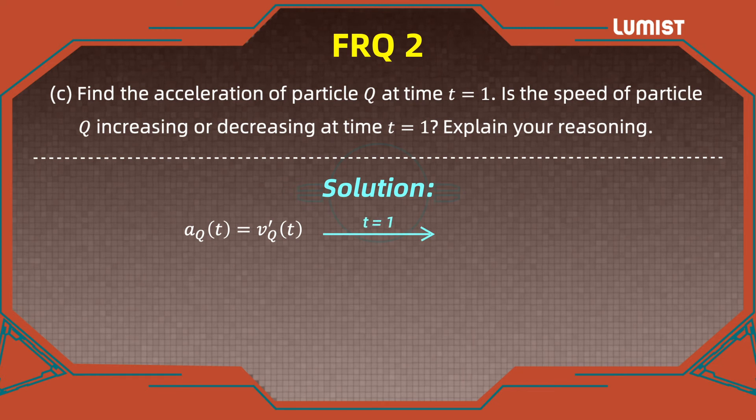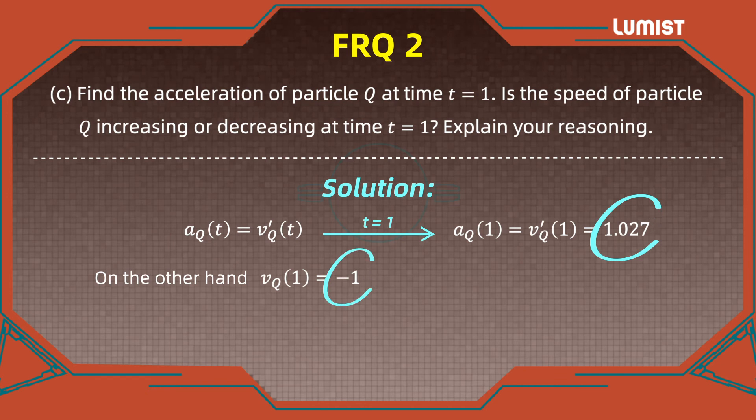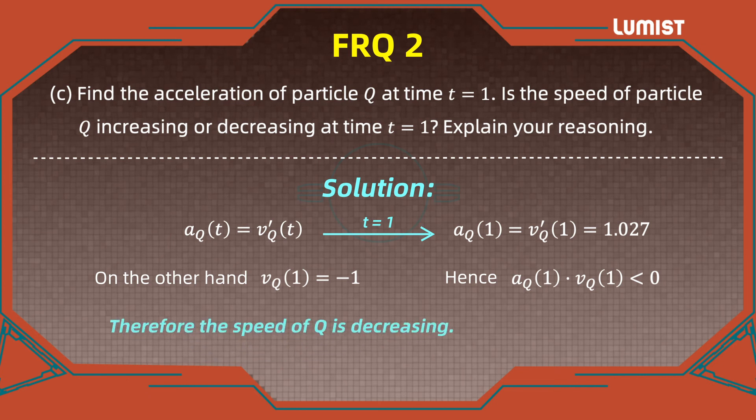We plug in t equals 1 to obtain the value we're interested in: a_Q(1) equals v'_Q(1). We plug these values into a calculator and we get approximately 1.027. Now we know the velocity of Q at 1 equals minus 1. Notice that this is positive, this is negative. As a conclusion, the product of the acceleration at 1 and the velocity at 1 is negative, so they have different signs. We can say, therefore, that the speed of Q is decreasing. This brings us to the end of part C.